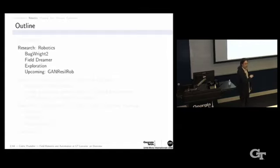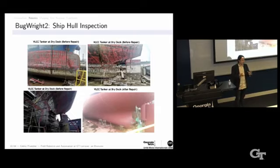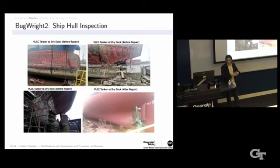Now let's talk about research activities. I'll start with the BugRite 2 project. BugRite 2 is a project on ship hull inspection. It's one of these big EU projects. It covers 21 partners across Europe, around 9 million euros. And we are coordinating that.